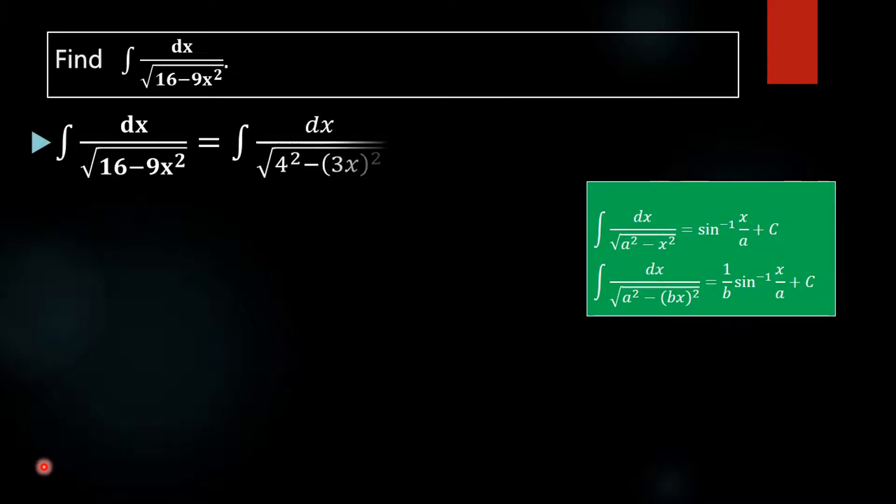First, we rewrite this term in the form of a squared minus x squared. 16 is rewritten as 4 squared, and 9x squared as 3x whole squared. So a equals 4 and x equals 3x.